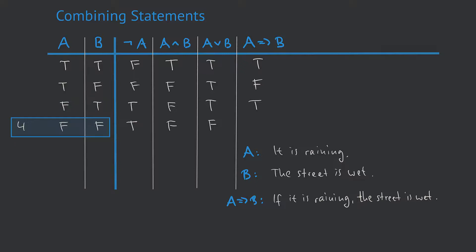A similar consideration holds for the fourth line. Both A and B are false — meaning it is not raining and the street is not wet. That doesn't contradict our implication, so that also leads to a true. In fact, these four values for A implies B, which we have discovered in the truth table, can and should from now on be seen as the definition of the implication operator.